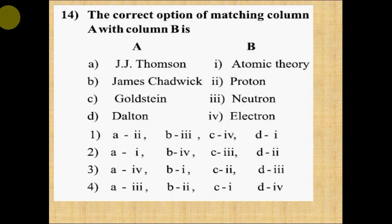Question number 14: The correct option of matching column A with column B is: Column A: J.J. Thomson, James Chadwick, Goldstein, Dalton. Column B: atomic theory, proton, neutron, electron. Option 1, A-2, B-3, C-4, D-1. Option 2, A-1, B-4, C-3, D-2. Option 3, A-4, B-1, C-2, D-3. Option 4, A-3, B-2, C-1, D-4. Correct answer is option 1, A-2, B-3, C-4, D-1.